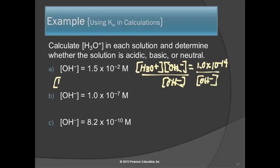For part A, the hydronium ion concentration equals 6.7 times 10 to the minus 13 molar. For part B, if the hydroxide ion concentration is 10 to the minus 7, and we take 10 to the minus 14 divided by 10 to the minus 7, we end up with 10 to the minus 7.